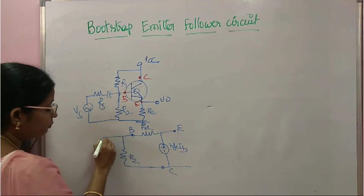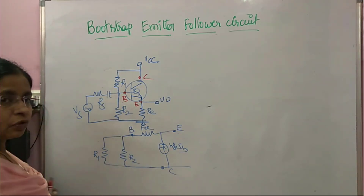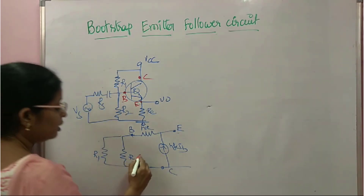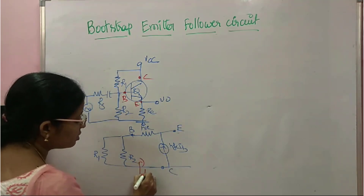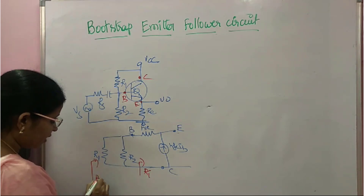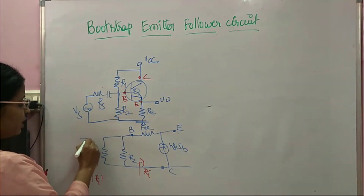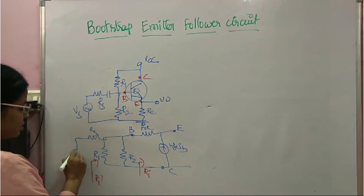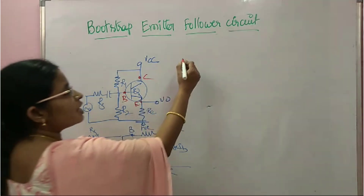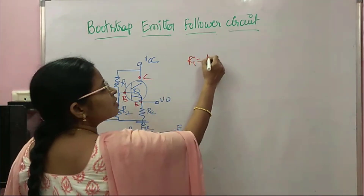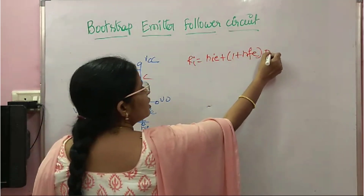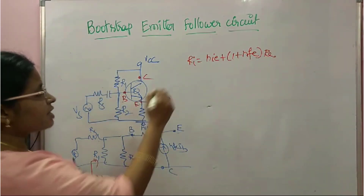So we have R2 and R1 in parallel, and after that you have Ri' along with Rs and Vs. Now, what is Ri for the CC configuration? From the table, Ri_CC equals hie plus (1 + hfe) × Re.